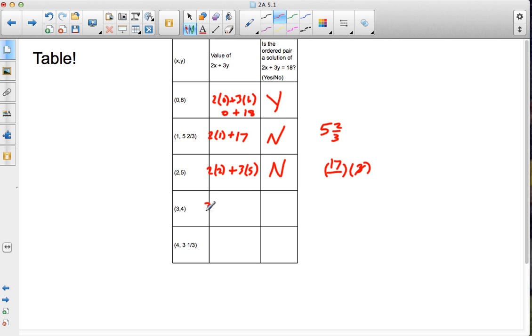How about 3 and 4? 3 times 2 plus 3 times 4. 3 times 2 is 6. 3 times 4 is 12. 6 plus 12 does equal 18, so (3,4) is also a solution of 2x plus 3y.